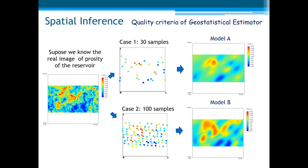Now we'll see two quality criteria the geostatistical estimator should observe. For example, suppose we know the reality and suppose this is the real image — this 2D version of a real image of porosity of a reservoir. From this real image we take two different sets of samples. The first one, we take 30 samples, and we take another set with more samples. Based on those samples, we create one interpolation: model A, based on the first set of samples. And based on the larger set of samples, we create a second interpolated model, model B.